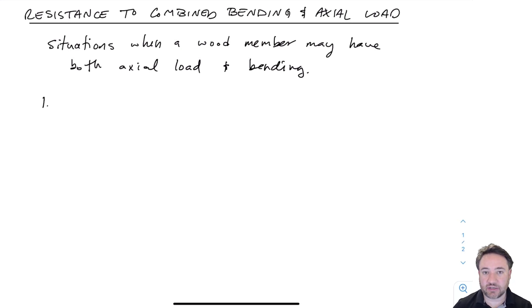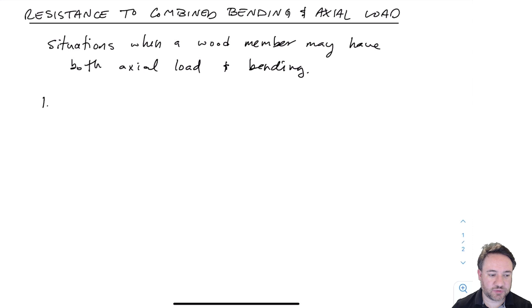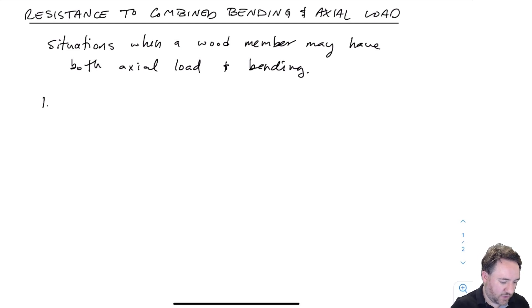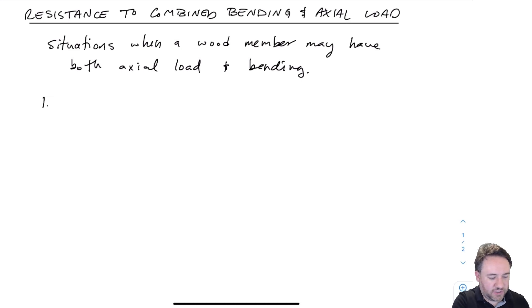So up to now we've covered how to design columns with just compression load, how to design members with just tension, and how to design beams which take bending and shear. But what happens if we have a member that does both at the same time? I'm going to show some examples, present the code equations from the standard, and then elaborate on what those equations mean and why they are the way they are.